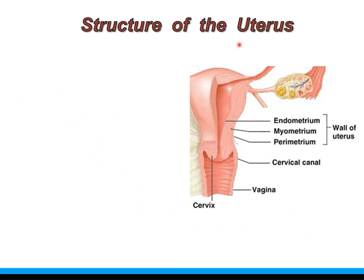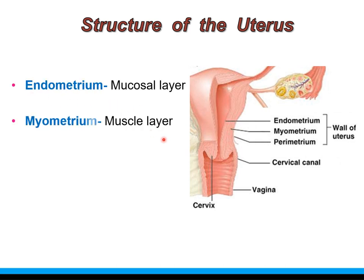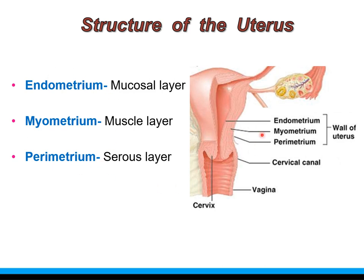Moving on to the structure of the uterus: the wall is composed of three layers from within outwards — endometrium, myometrium, and perimetrium. The endometrium is the innermost or mucosal layer. The myometrium is made up of smooth muscles, and the perimetrium is the serous layer.